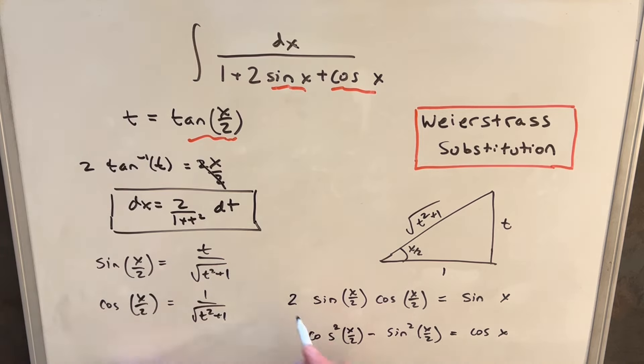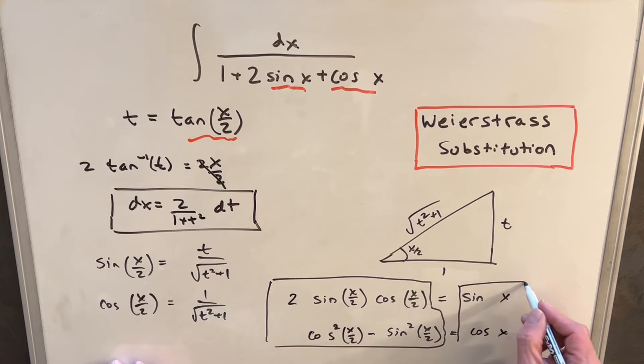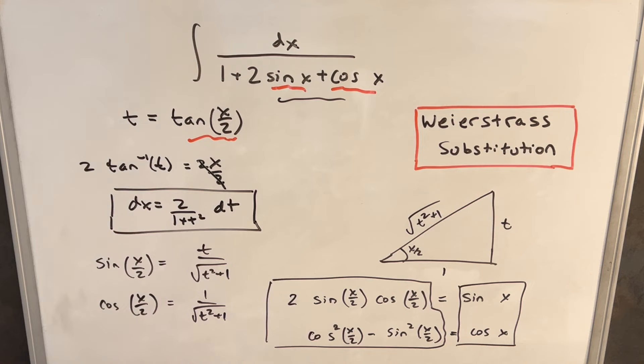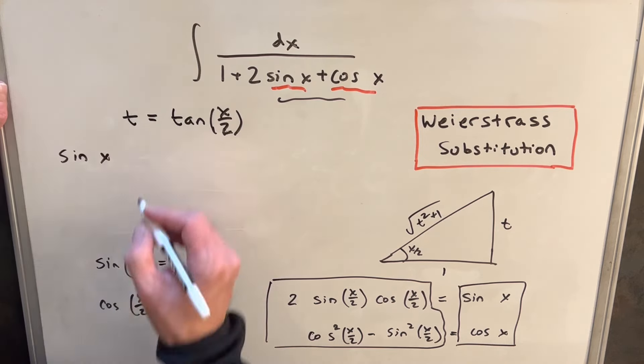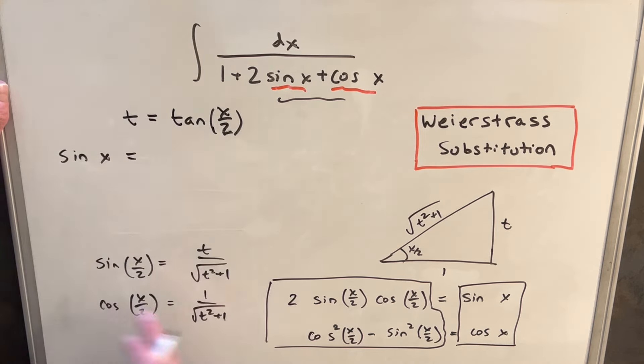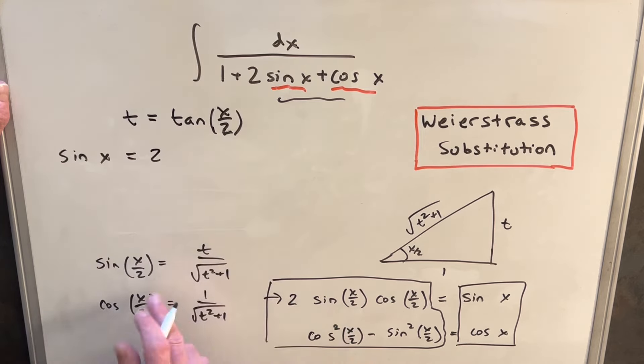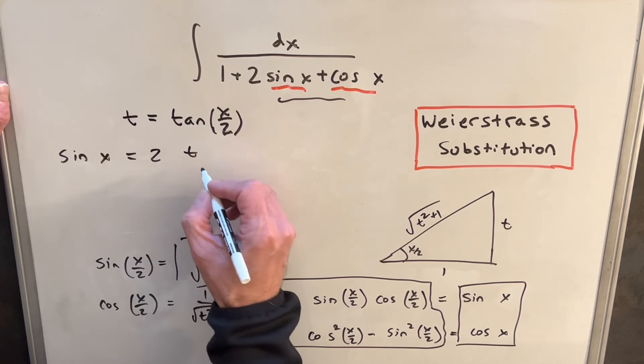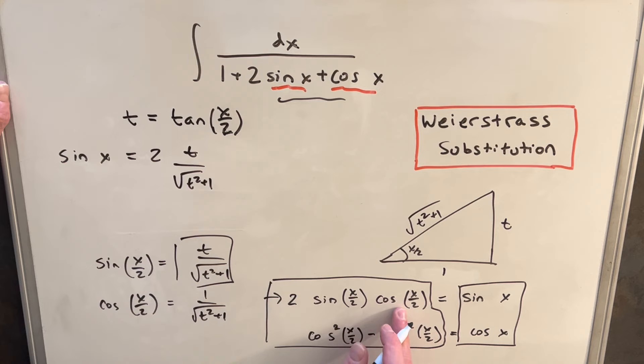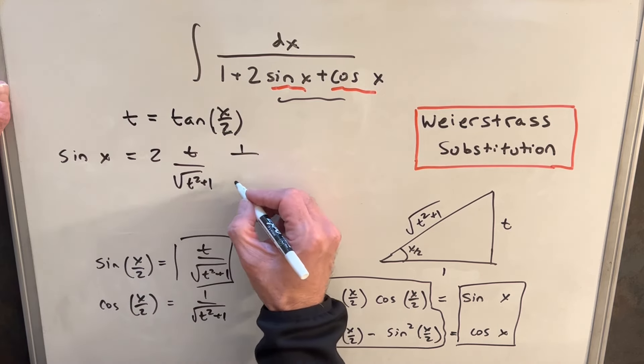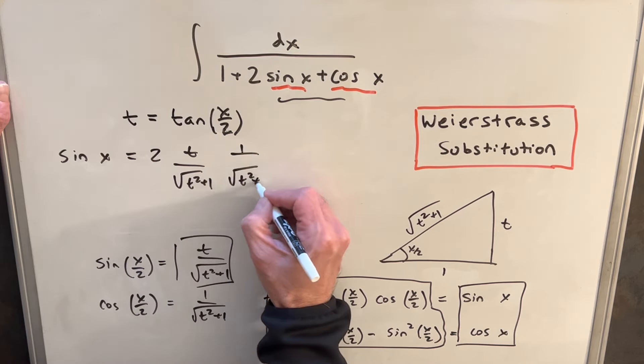So everything on the left here, everything over here, we already know. We just found the value for us. We already know our half angle trig functions. So then we have a way to get to our full angle trig functions that we want for here. Okay, so now just plugging in, I'll first find my value for sine of x using this formula here. So we're going to have 2 sine x over 2, which we know is this value, so that's going to be t over square root of t squared plus 1. And then our cosine x over 2 value, which is going to be 1 over the square root of t squared plus 1.